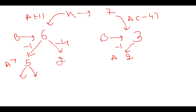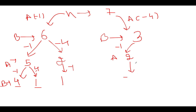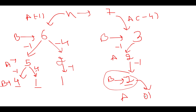Continuing the tree: from five stones, Alice can remove one stone leaving four, or remove four stones leaving one for Bob. From the two-stone branch, the only possibility is removing a single stone, leaving one stone. We keep expanding until we reach leaf nodes. At each branch, we track whose turn it is and how many stones remain.